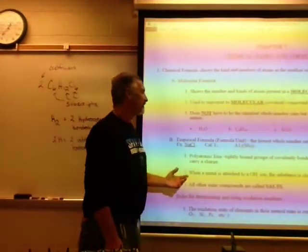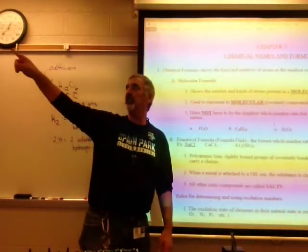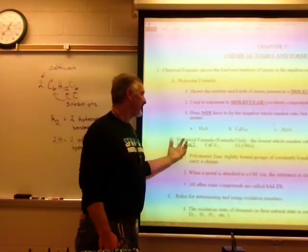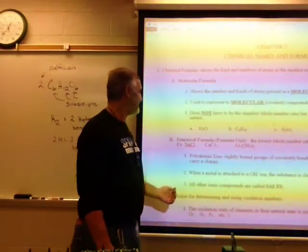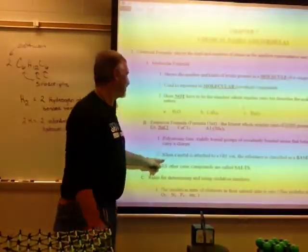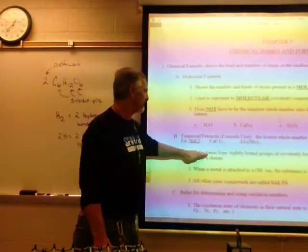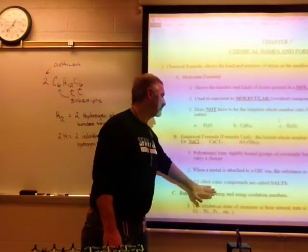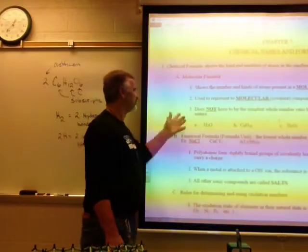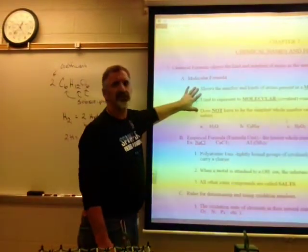In an ionic compound you're going to have some polyatomic ions — many-atomed ions that are bonded together and carry a charge. When a metal is attached to an OH, we call it a base. When attached to other ionic compounds, we just call them salts. All of these use ionic or empirical formulas because they're all ionic.